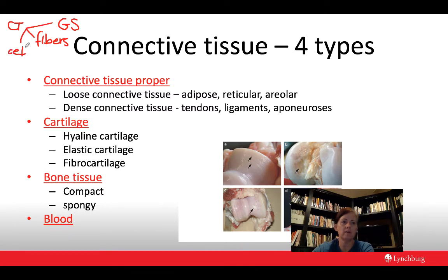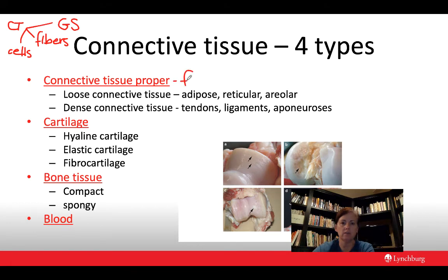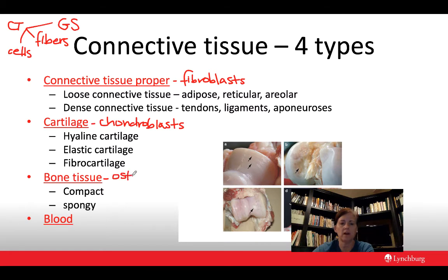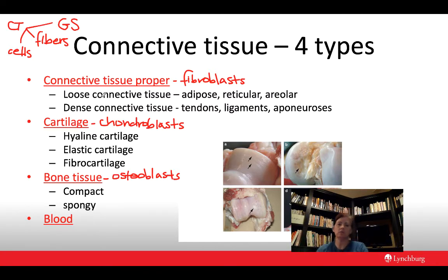Connective tissue also contains different cell types — these are our resident cell types. In connective tissue proper, the resident cell type is fibroblasts, and the mature form is fibrocytes. For cartilage, anything cartilage-related is 'chondro,' so the resident cells are chondroblasts. For bone tissue, anything bone-related is 'osteo,' so these are osteoblasts. These are the immature forms of the cells that actively lay down connective tissue. Once they mature, they become fibrocytes, chondrocytes, or osteocytes.